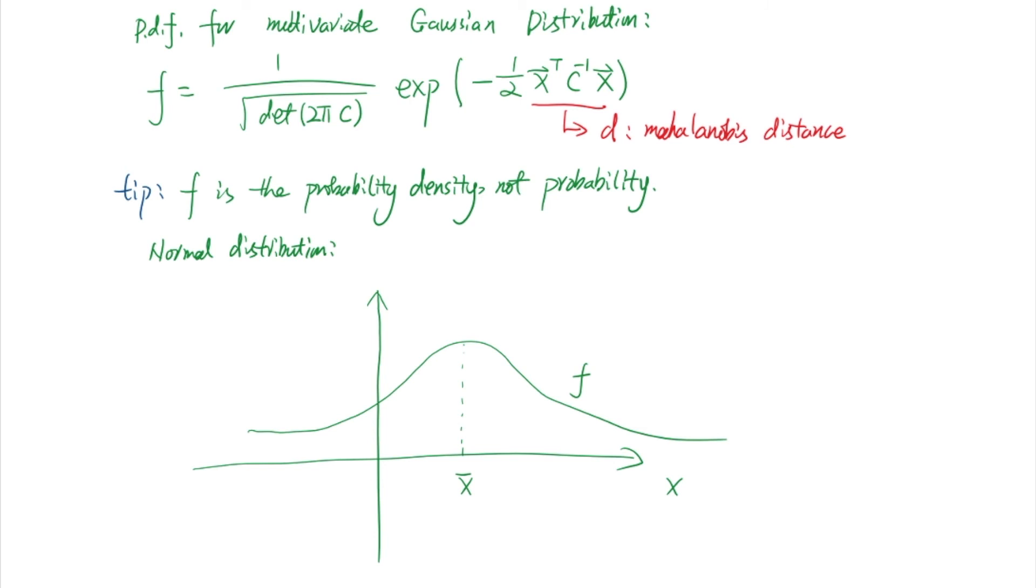We know that the probability is always less than or equal to 1. However, the probability density can be arbitrarily large or small. For example, here, the maximum value of the probability density, which occurs at X bar for normal distribution, can be arbitrarily large, as large as 1000 is possible. However, the area below this curve is always equal to 1.